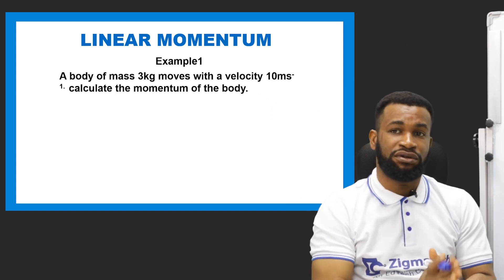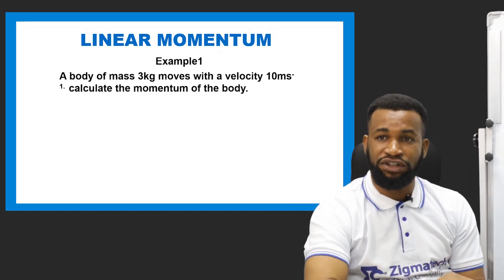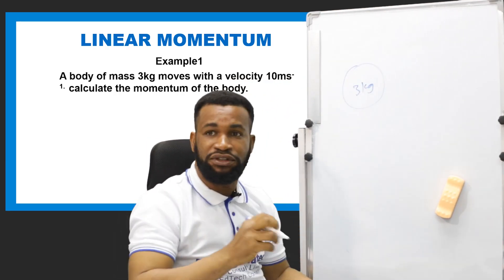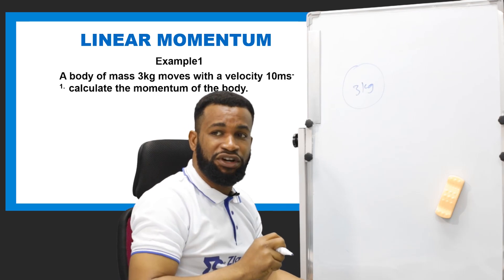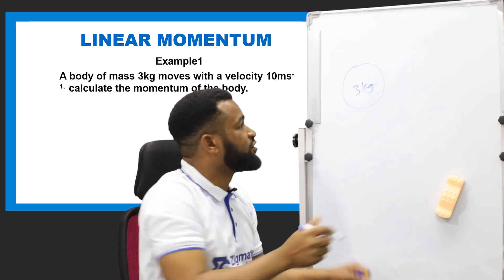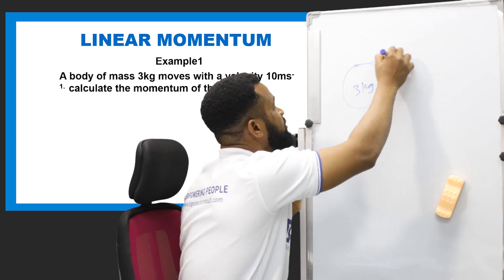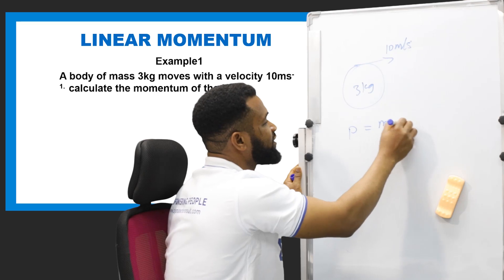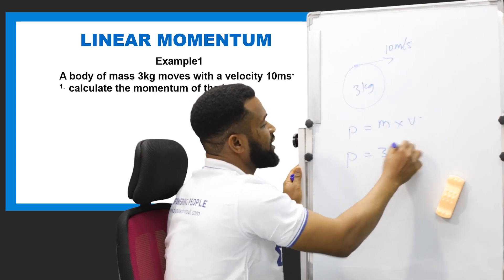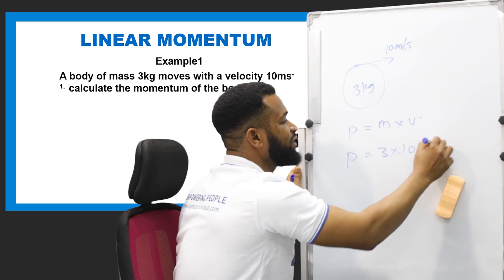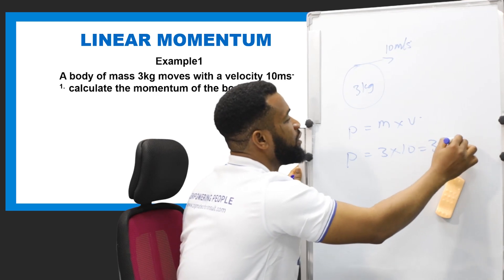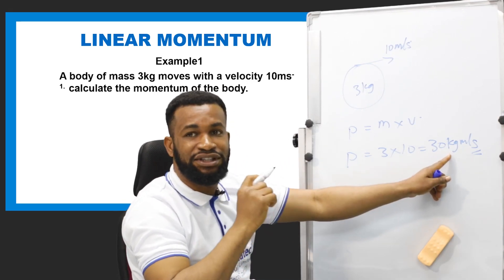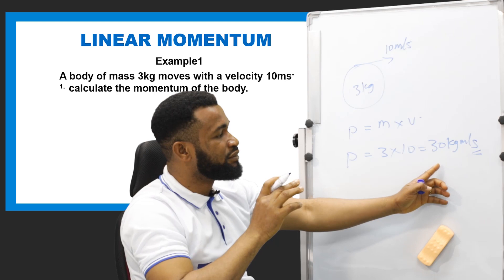Let's look at the first question. A body of mass 3 kg moves with a velocity of 10 meters per second. Calculate the momentum. So momentum is mass times velocity: 3 times 10, which is 30 kg meters per second. This is the SI unit of momentum — kilogram meter per second.